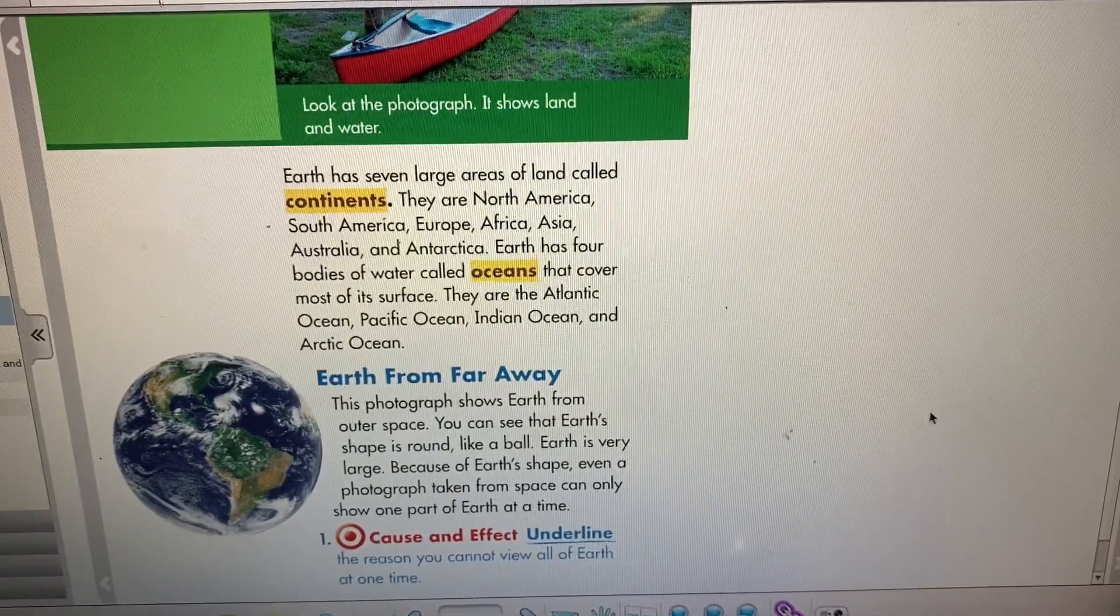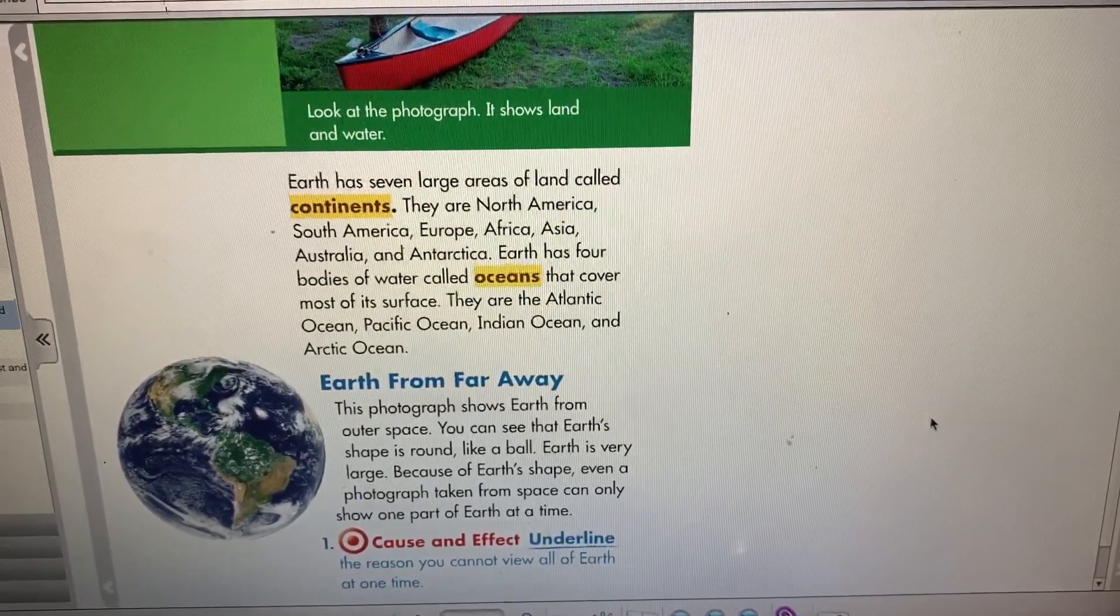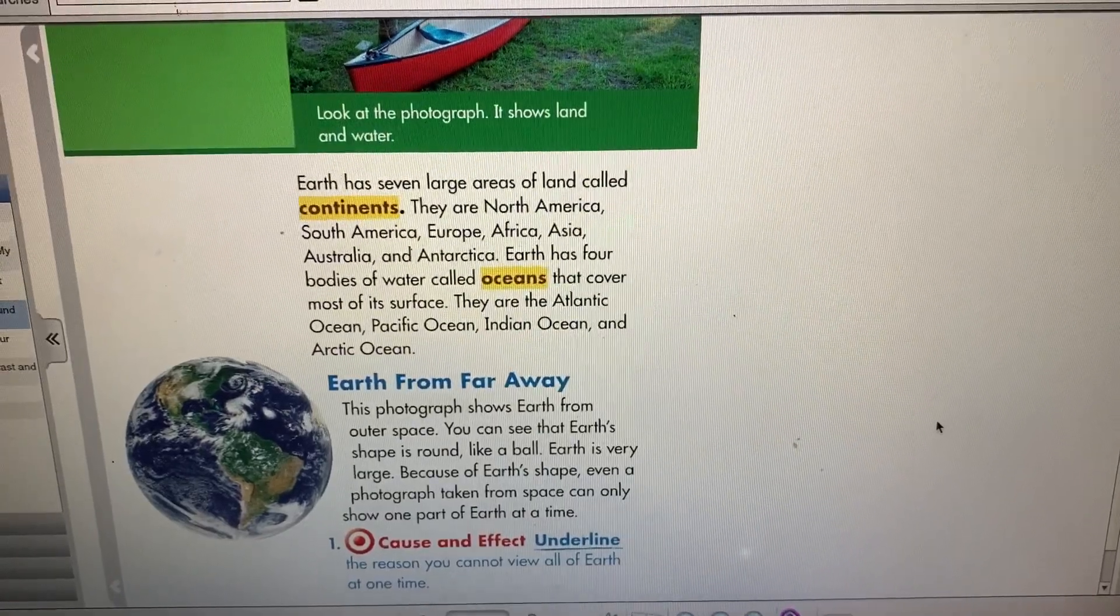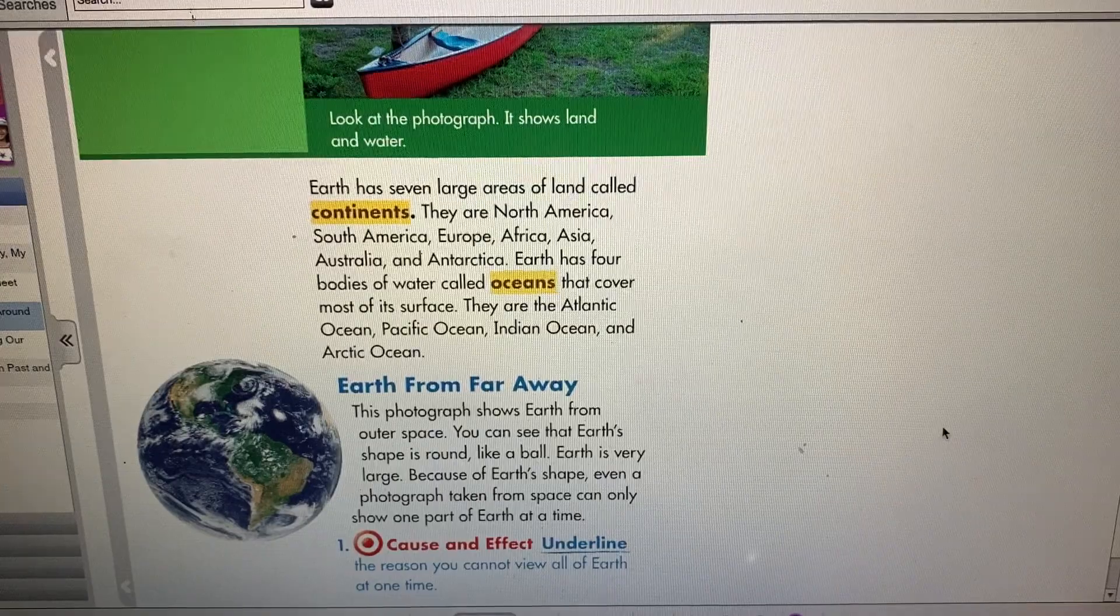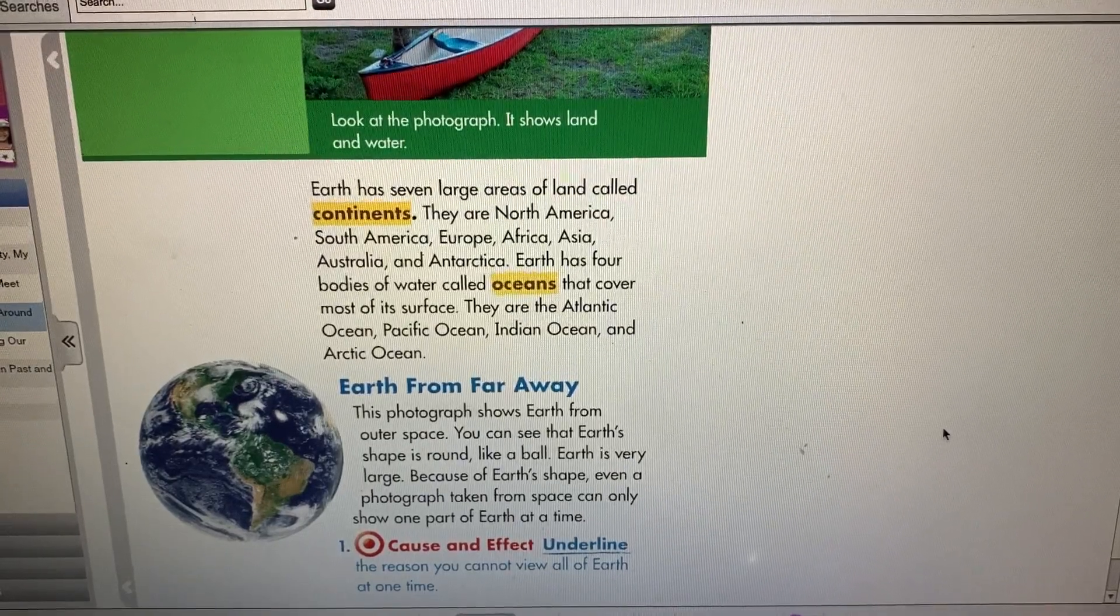Earth has seven large areas of land called continents. They are North America, South America, Europe, Africa, Asia, Australia, and Antarctica.